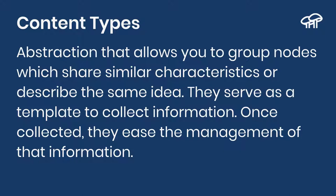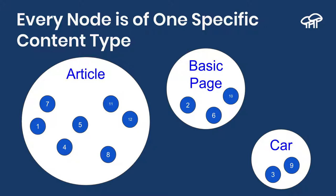For the car content type, you will collect year, plate, model, number of windows, number of doors, and so on. For the motorcycle, you will have a different template that will not contain number of windows or number of doors because there aren't any. In the event content type, you will have the event dates, registration price, and the capacity of the event. So the content type is going to be the template that allows you to collect the information, and once it is collected, the content type will help you manage that information.